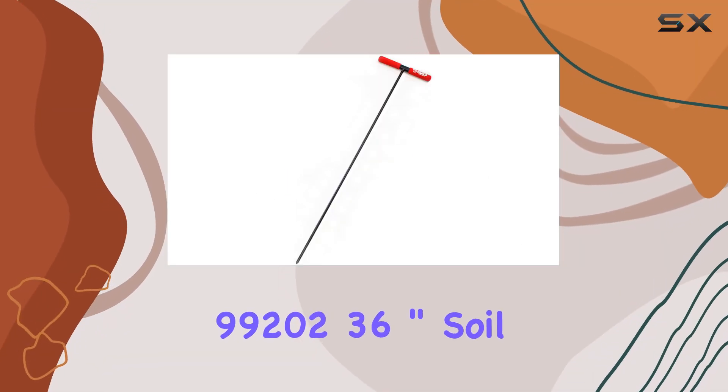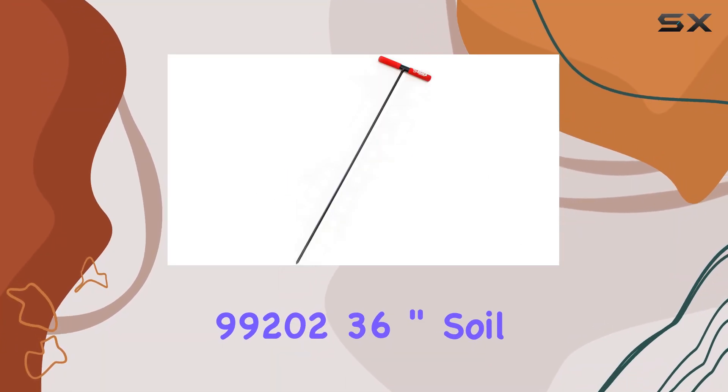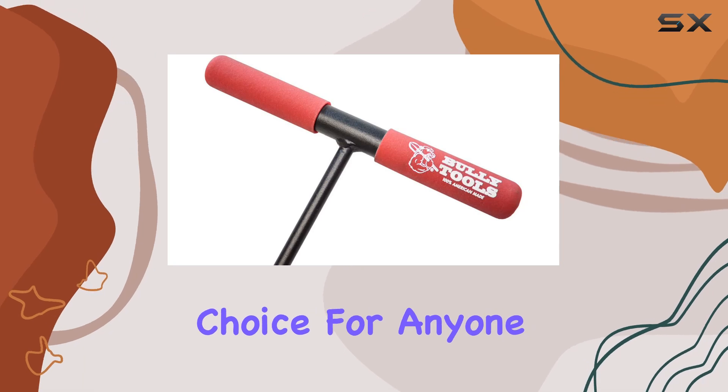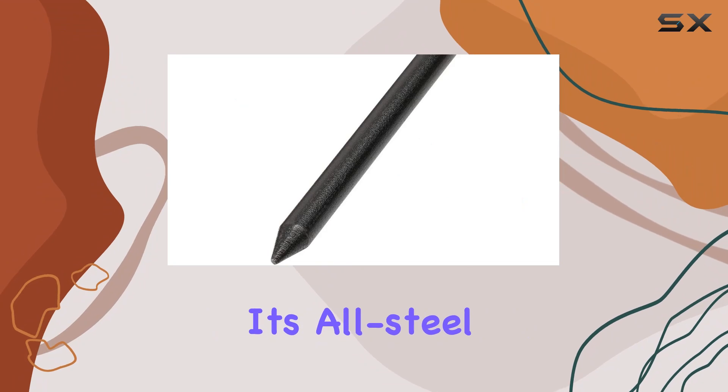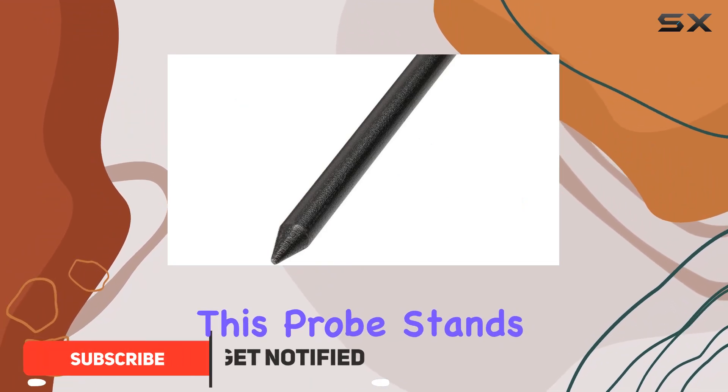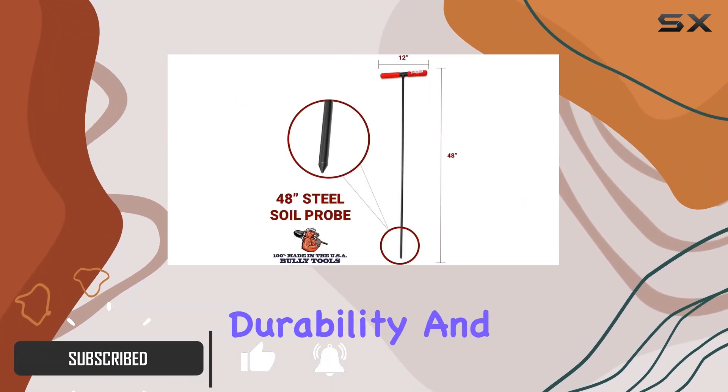The Bully Tools 99202 36-inch soil probe is a top-tier choice for anyone needing a robust and reliable tool for soil sampling. With its all-steel construction, this probe stands out for its durability and strength.